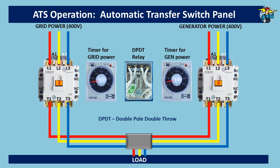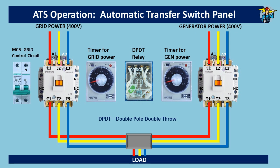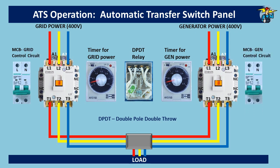Each inlet port has two outlet points — one at normally open position and the other at normally closed position. We also need two-pole MCBs for the grid side and the generator side.